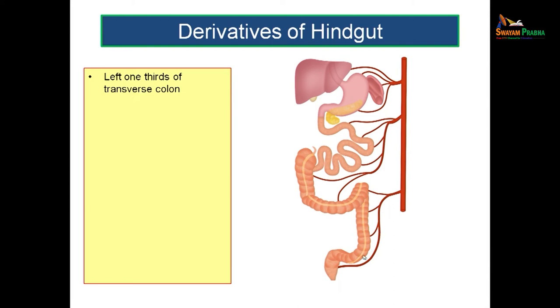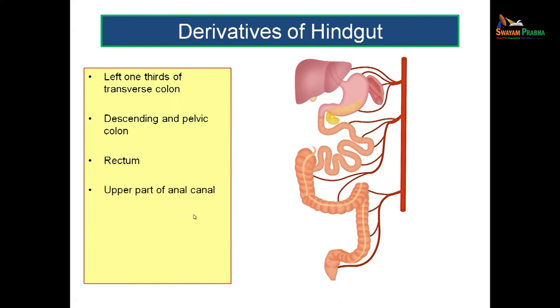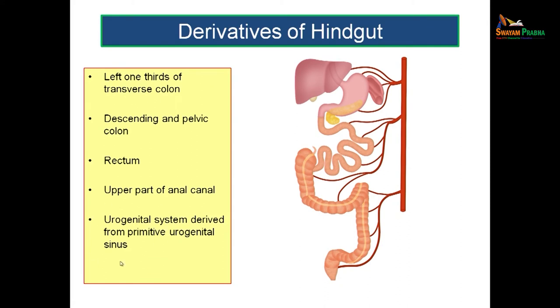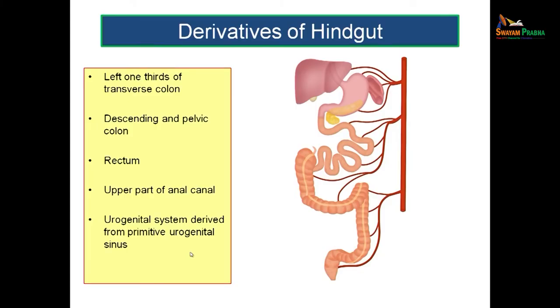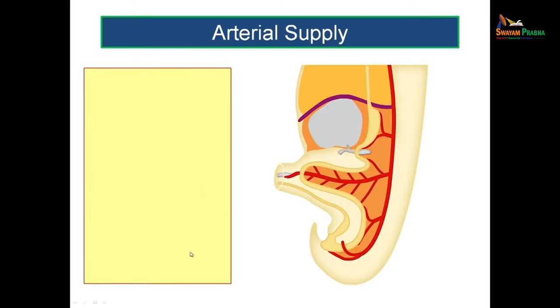The structures derived from the hindgut are the remaining part — the left one-third of the transverse colon, the descending colon, the pelvic colon, the rectum and upper part of the anal canal. Along with this, you have the urogenital system also derived from the primitive urogenital sinus, which is actually a part of the cloaca. So that is also a derivative of the hindgut.